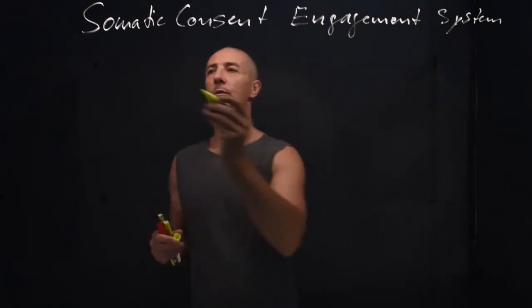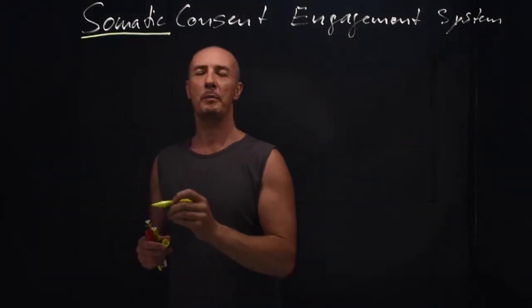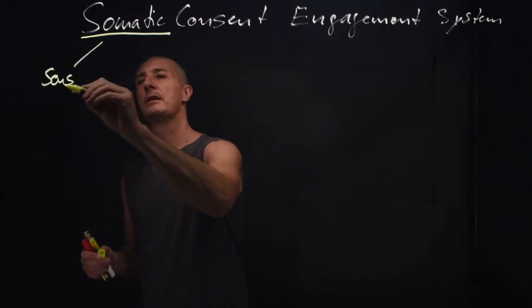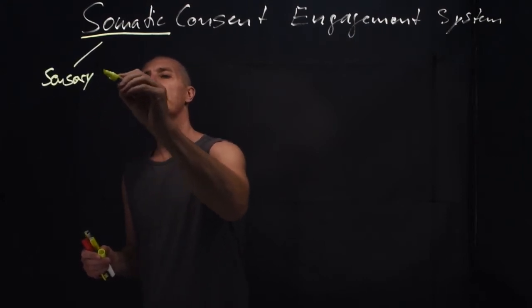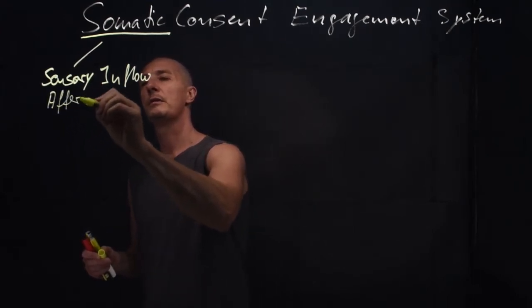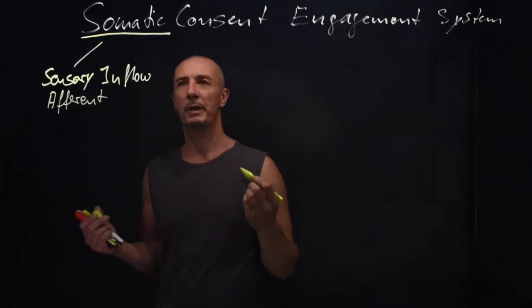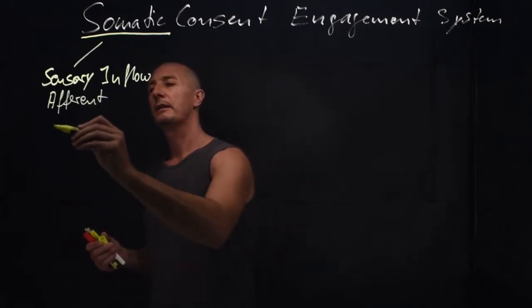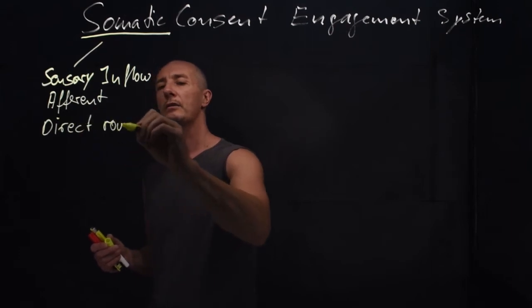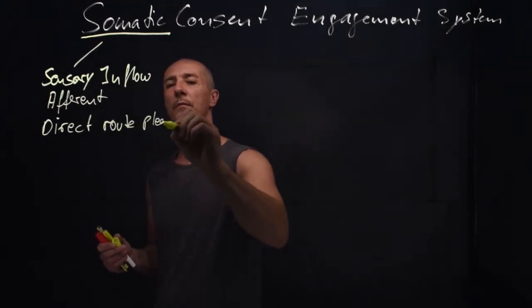So let's start with somatic. Somatic is the sensory inflow, the so-called afferent part of the somatic nervous system. It's what we call the direct root of pleasure.